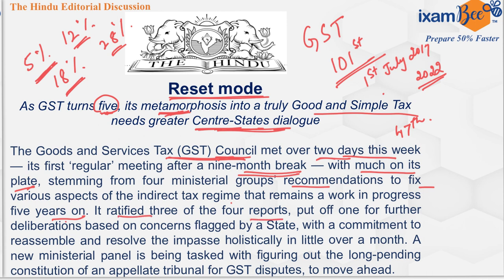The Council ratified three of the four reports and put off one for further deliberations, based on concerns flagged by a state, with a commitment to reassemble and resolve the impasse holistically in a little over a month. The impasse means a situation — a 'Gati Rodh' — where there is no way forward.